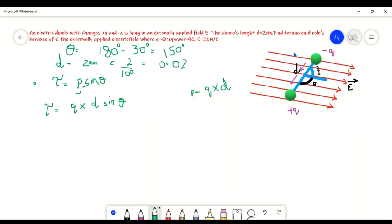Welcome to my channel, Studies Articles by Maddy. Today I've come with an intrinsic question: an electric dipole with charges +Q and -Q is lying in an externally applied field. As you can see the field lines, the dipole's length is two centimeters and we should be finding the torque.